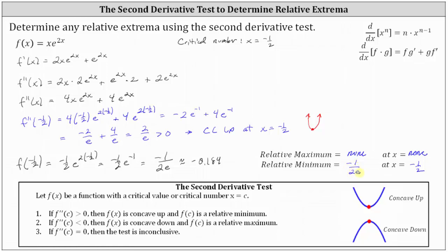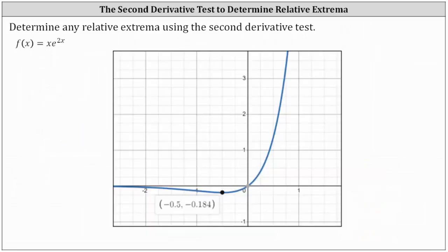Let's verify this graphically. In blue, we have the graph of the original function f of x equals x times e to the power of 2x. The graph has a low point where the x-coordinate is negative 0.5, or negative one half, and the y-value is exactly negative 1 divided by 2e, approximately negative 0.184. The graph also confirms the function is concave up at this low point.